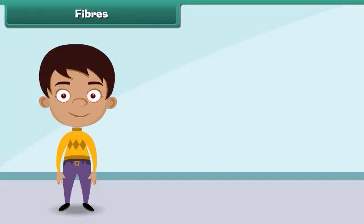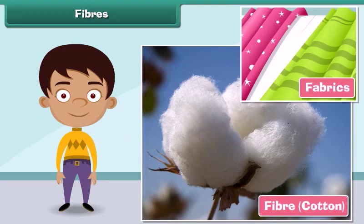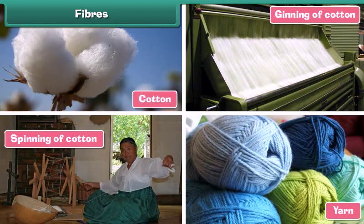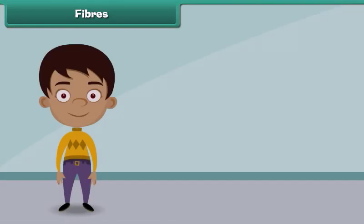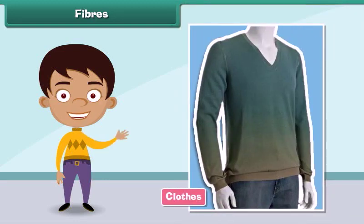Fibers are the raw material used in manufacturing clothes. Fibers are transformed into clothes through a series of steps. First, raw fibers are twisted together to form long strands of threads known as yarns. The yarns are then woven and knitted to form fabrics. Finally, fabrics are used to make clothes of different sizes and shapes to suit the needs of the people.